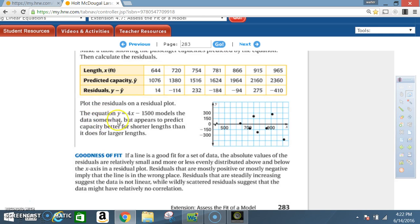Going back to example one, it says the equation y equals 4x minus 1500 models the data somewhat but appears to predict capacity better for shorter lengths than it does for the larger lengths. When you plotted 644 and 14, notice how close it was to the x-axis. For the shorter lengths, the points seem to stay pretty close to the line, but the bigger lengths tend to get away from the line, which makes them less accurate.